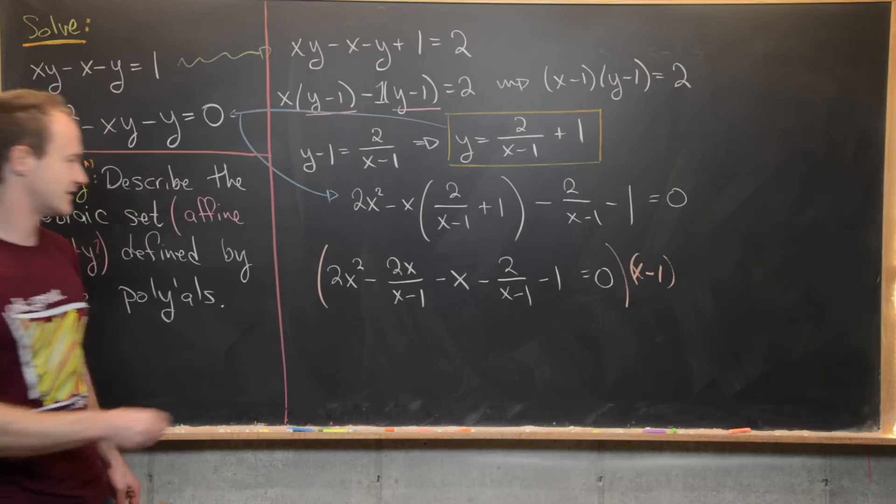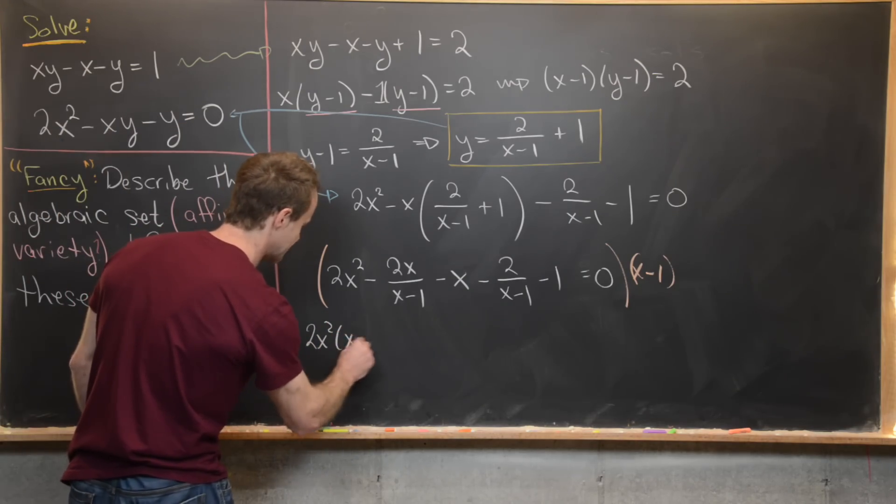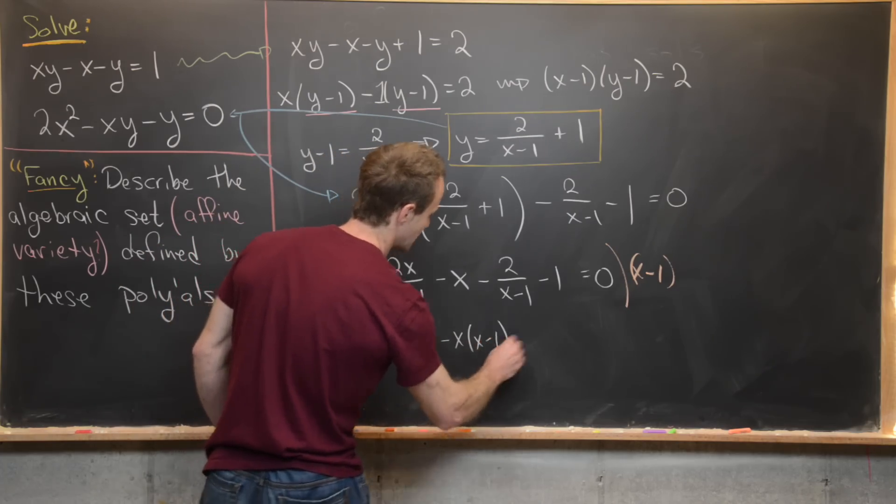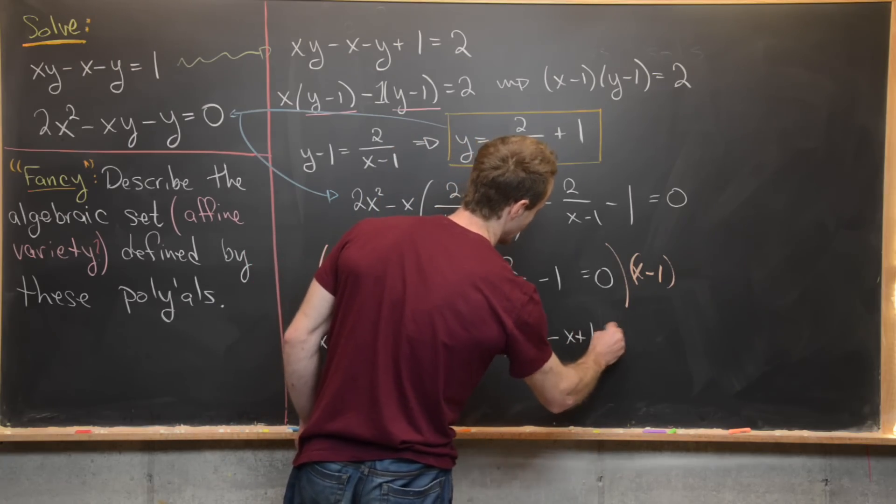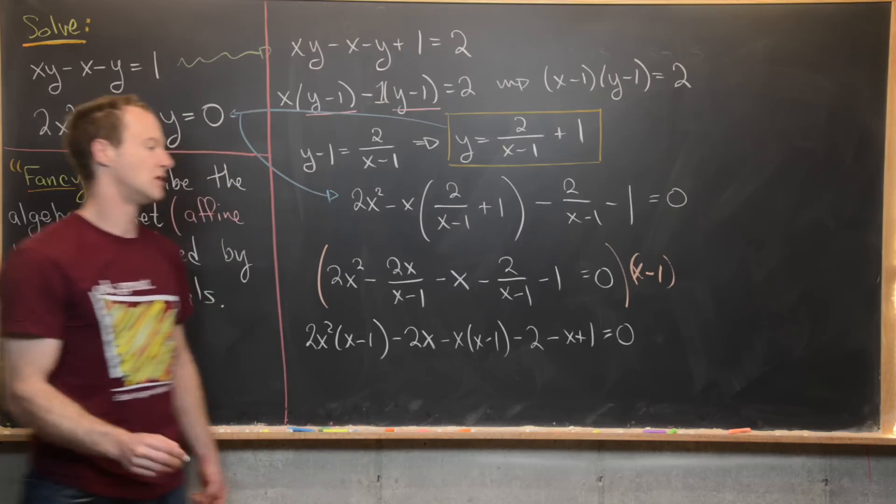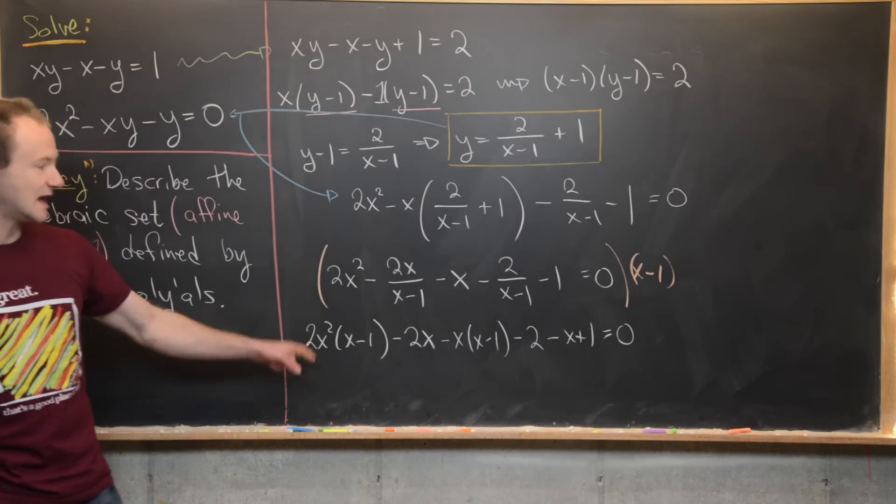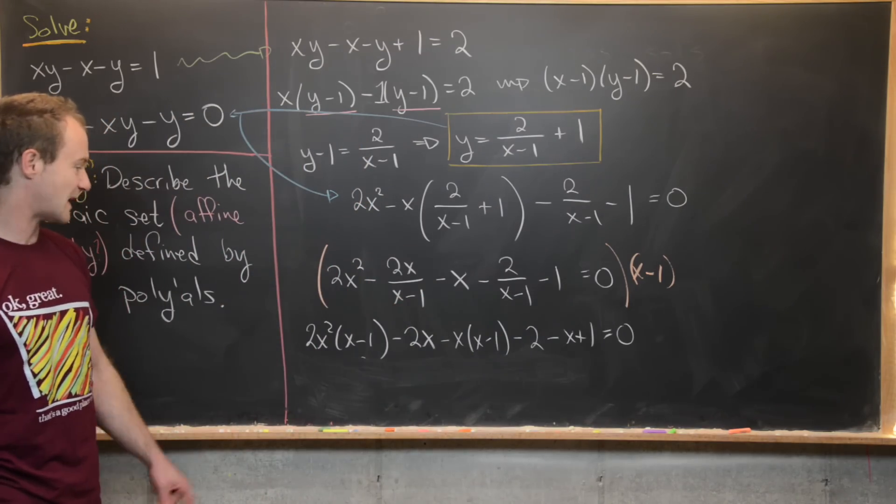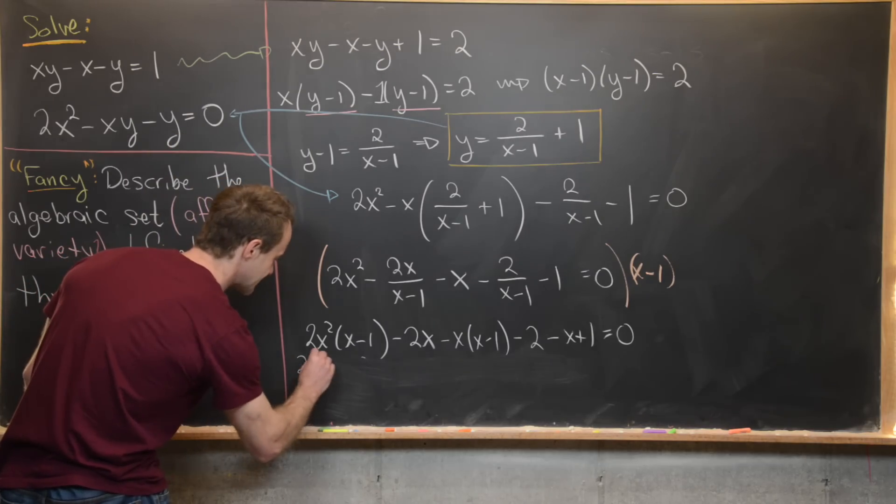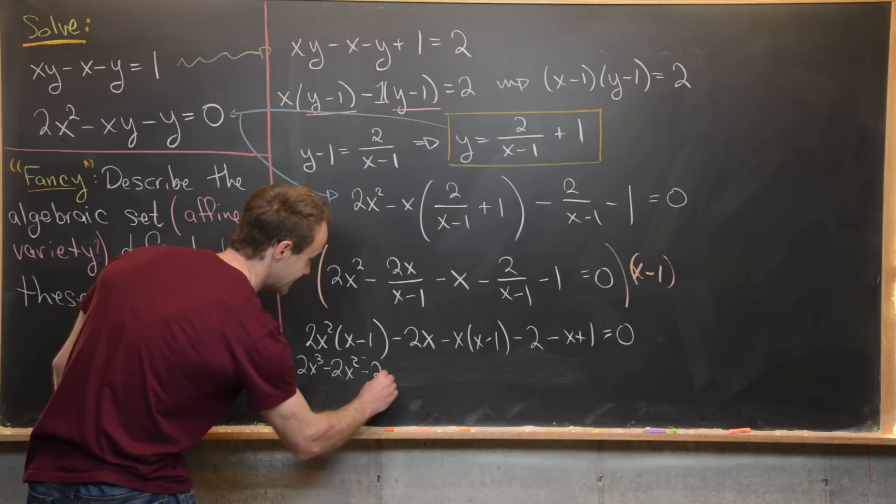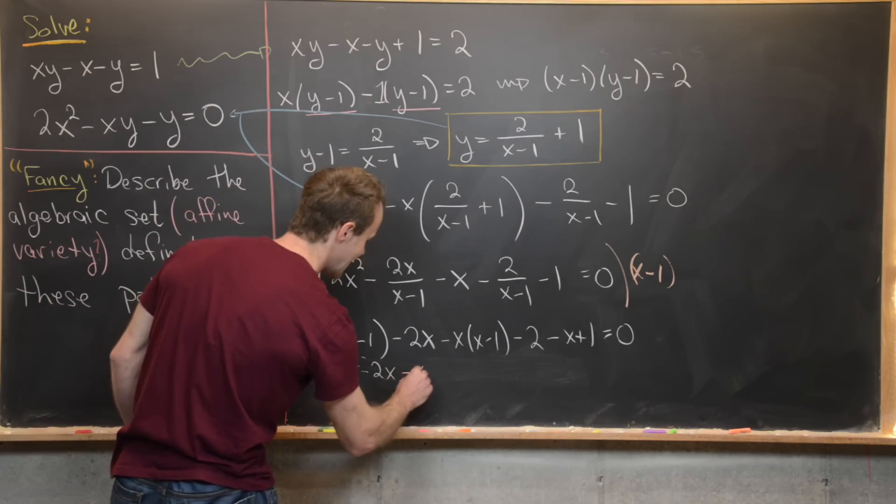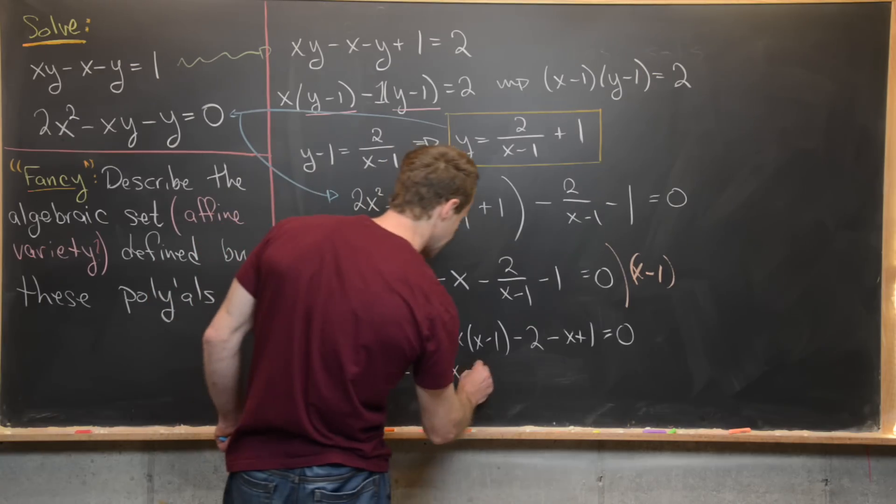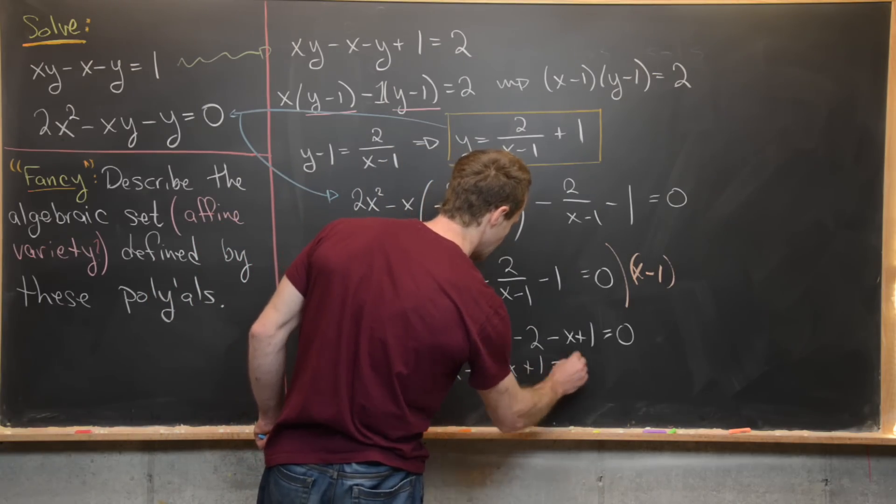Now we can go ahead and clear the denominator by multiplying both sides of this equation by x - 1. So let's see what that's going to give us. That's going to give us 2x²(x - 1) - 2x - x(x - 1) - 2 - x + 1 = 0. Okay, so again, we distributed the minus sign through here to give us x + 1. Now let's expand that a little bit. So here we'll have 2x³ - 2x² - 2x - x² + x from distributing the minus x out of the minus one. And the next minus 2 - x + 1 = 0.